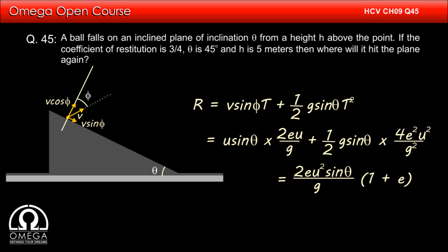On simplification, this becomes 2eu² sin θ(1 + e)/g. Putting the value of u as √(2gh), this becomes 4e(1 + e)h sin θ.